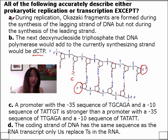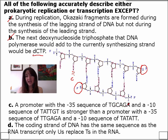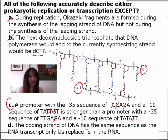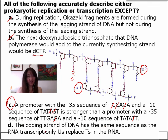So we're looking for the false statement — true, true. And then down here: a promoter with a minus 35 sequence of TGCAGA and a minus 10 of TATAAT is stronger than a promoter with minus 35 of TTGAGA — only one difference — and TATA. That is a false statement, because clearly the first promoter is weaker than the second promoter. So we've got our answer. But let's see why D is true: the coding strand of DNA has the same sequence as the RNA transcript, only U's replace T's. Bingo! That's the concept I said I would cover at least 10 times today. We've hit time number two, and I promise at least eight more times.